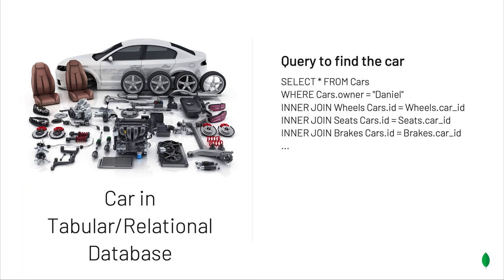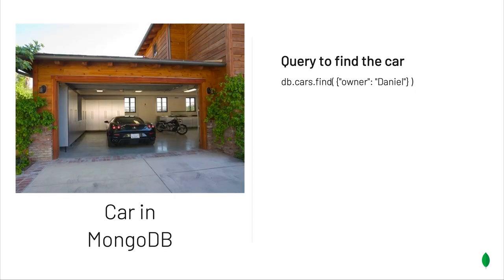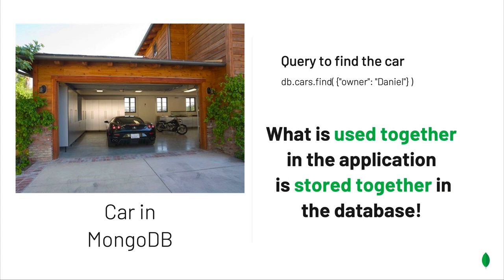So this is an example of a SQL query to retrieve the car, where we have a bunch of joins that will go to the different shelves and assemble all the parts to return to the application. With MongoDB, it's very simple — we just need something to identify the car and the whole car will come out at once. With MongoDB, what is used together in the application is stored together in the database.